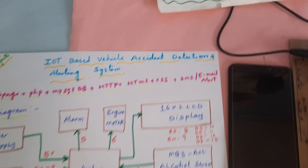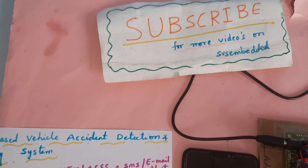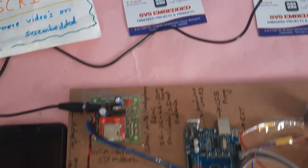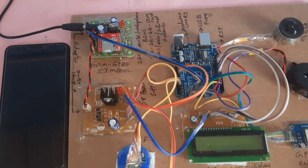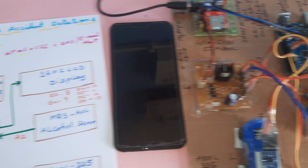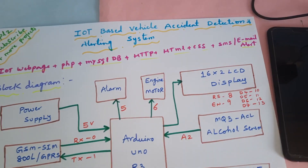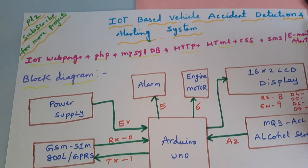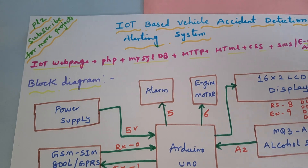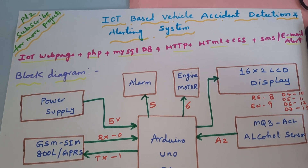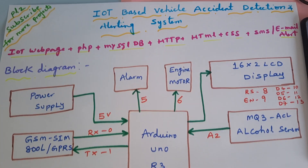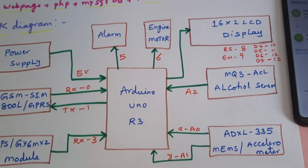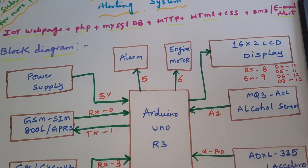Hi, we are from SVS Embedded. The project title is IoT Based Vehicle Accident Detection and Alerting System. In this project we are using an Arduino Uno R3 and a web page.